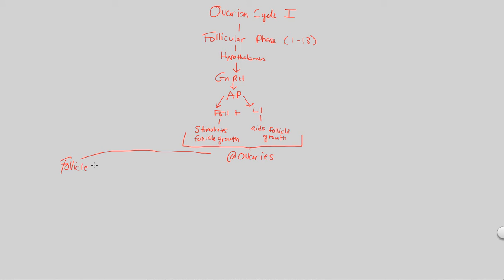In days 1 through 13, the follicle cells will have the following process. As a result of this message of FSH and LH reaching them, follicle cells will produce estradiol. It's an estrogen hormone called estradiol, the principal sex hormone.